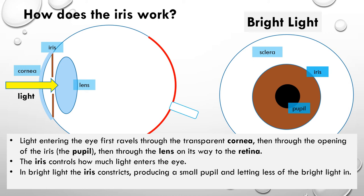So what happens is when it is a bright day, the iris closes up. So the hole in the middle of the iris, the pupil, gets quite small.